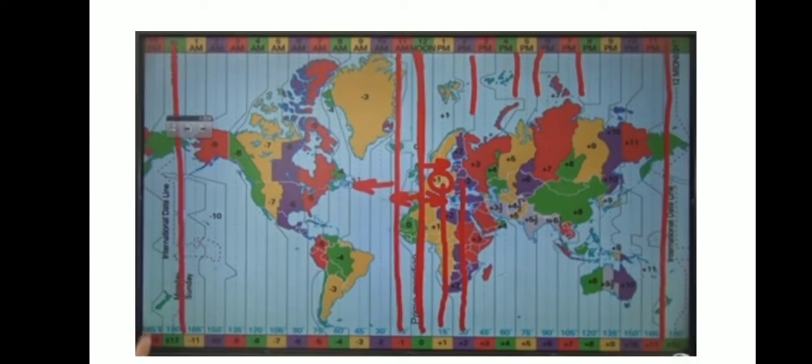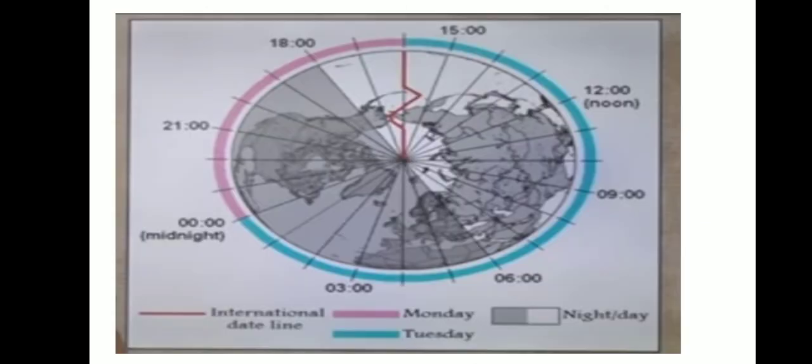Thus it is possible to find out the time of any place if we know its longitude and GMT. We merely have to add or subtract the difference in the number of hours from the given longitude.